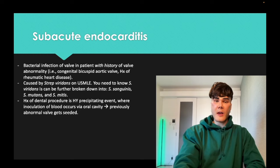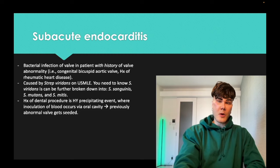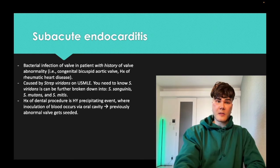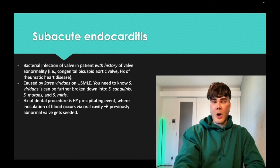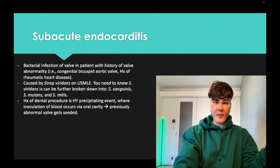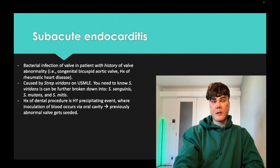They'll say a 39-year-old had a dental procedure and now has high fever with a new onset murmur — that's subacute endocarditis with strep viridans, because the patient probably has some underlying valve abnormality. Strep viridans doesn't cause acute endocarditis. For USMLE, it's staph aureus for acute with no prior valve issue, and strep viridans — sanguinus, mutans, or mitus — for subacute.